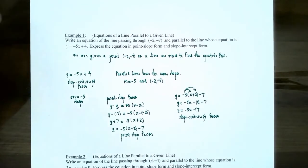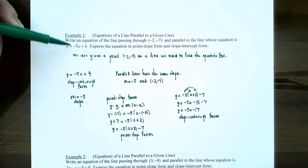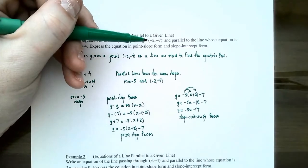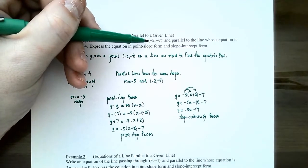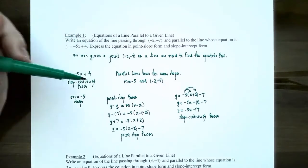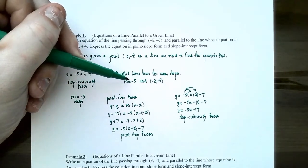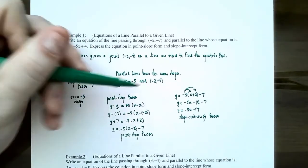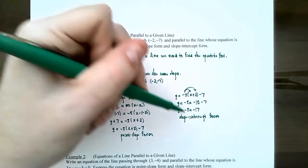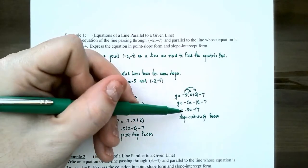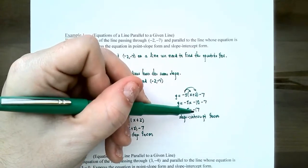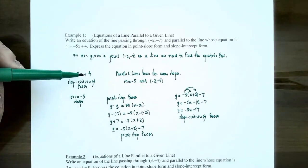So let's review what we found. We were given an equation with slope negative five, and a point negative two, negative seven that the new line must pass through. Since the lines are parallel, the new line also has slope negative five. We used point-slope form and simplified to get slope-intercept form. This line has slope negative five and crosses the y-axis at negative 17, while the other line crosses at four — so they are non-intersecting lines with the same slope.